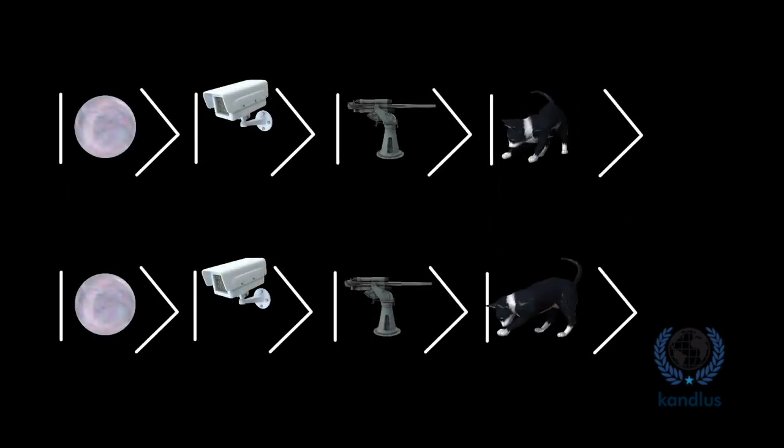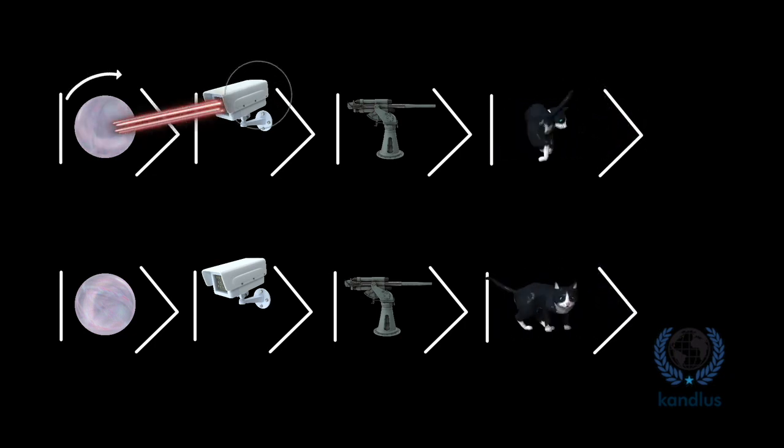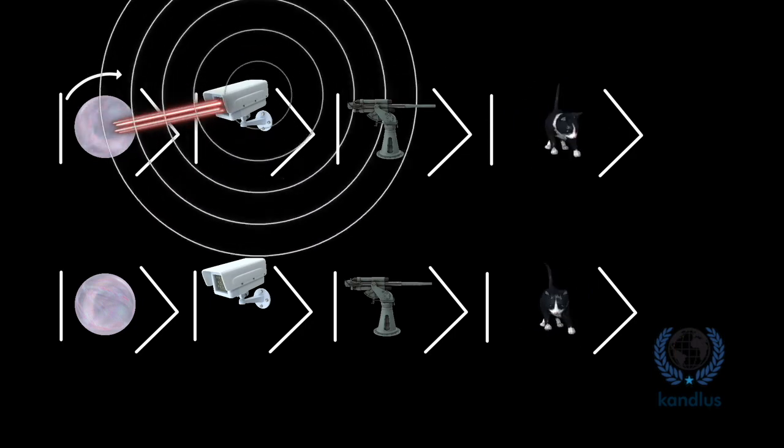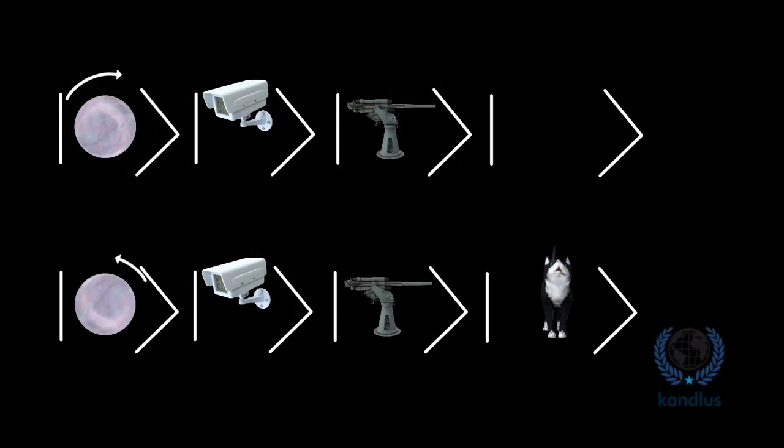In the above, the sensor clicks as the electron spins clockwise. The signal is sent to the gun, the gun fires, and finally the cat dies. And in the below, since the electron is rotating counterclockwise, the sensor is not activated and as a result nothing happens.